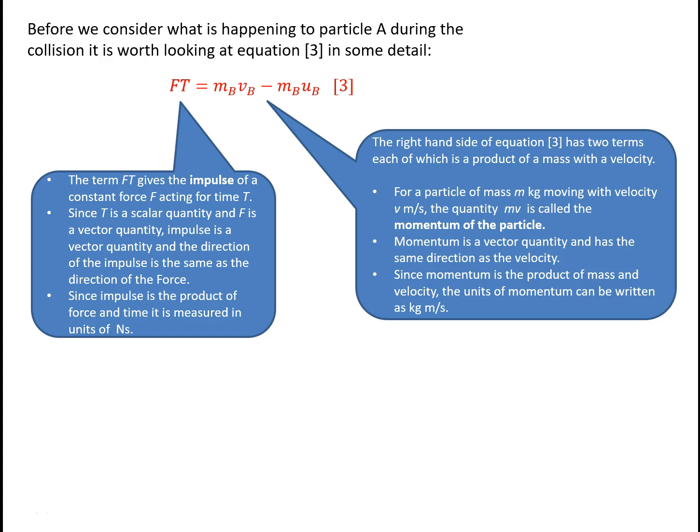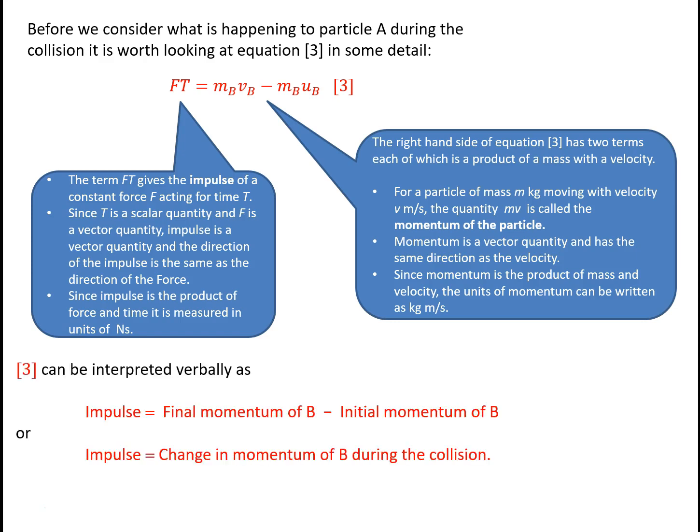Looking at equation 3 again, we can think of it as saying that the impulse acting on B is the final momentum of B minus the initial momentum of B. Or equivalently, the impulse is the change in momentum of B during the collision.